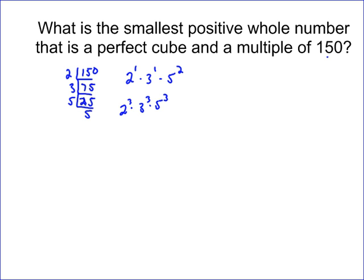It's also a multiple of 150 because this is inside there. It's the smallest because I had to add two new 2s, two 3s, and one 5. I didn't add anything extra besides what I had to add, exponent-wise, to give me a perfect cube.